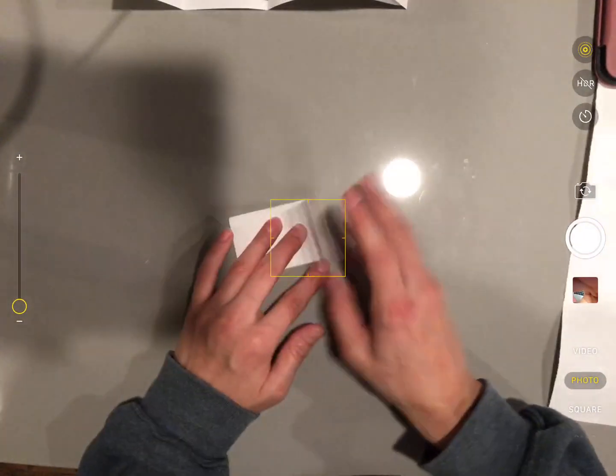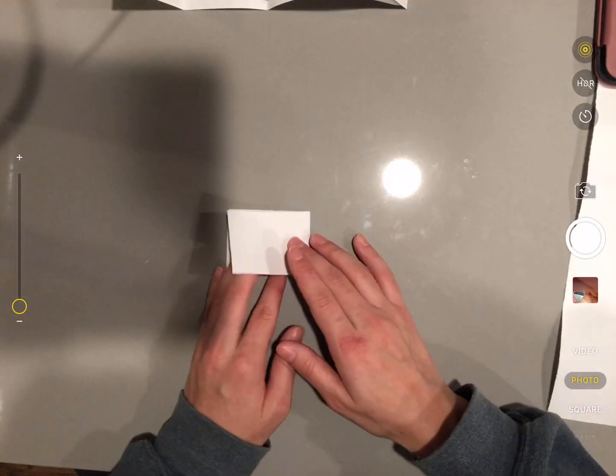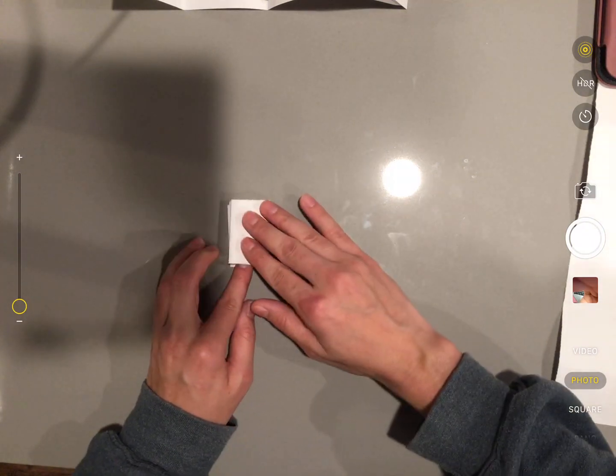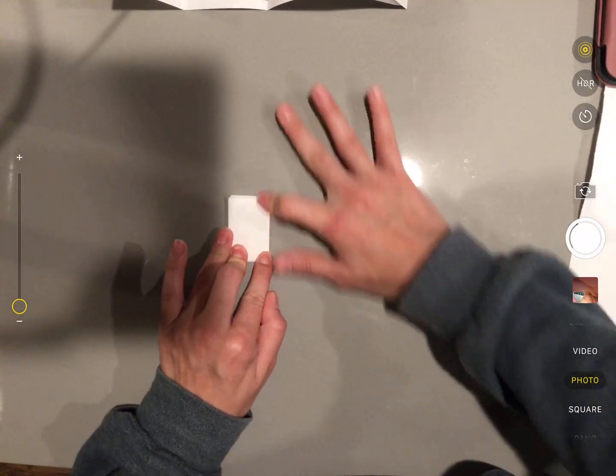Folding it once in half gave me two equal parts. Folding it twice in half gave me four equal parts. So if I fold it three times in half, how many parts do you think I'm going to have?